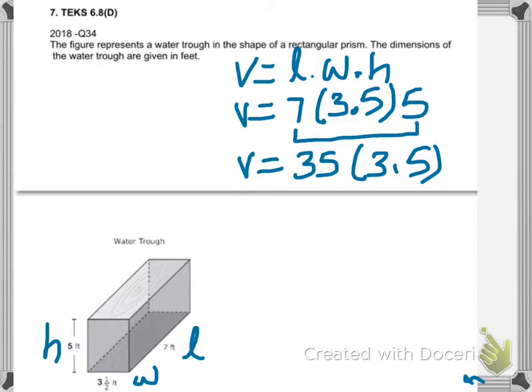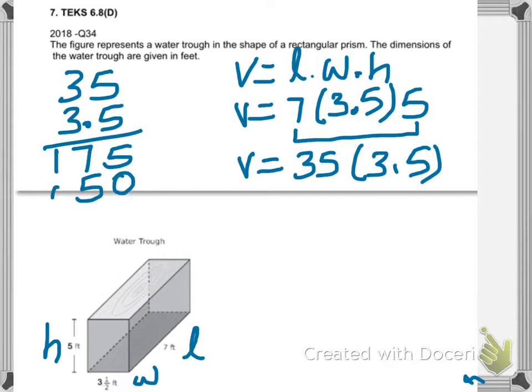Look at the answer choices — if any choice is less than thirty-five, eliminate it. You can also estimate: round thirty-five to forty and 3.5 to four, so forty times four is about one hundred sixty or less. The answer is going to be around one sixty, but we will do the exact math. Thirty-five times 3.5 — we know the result is in the range of one sixty or below.